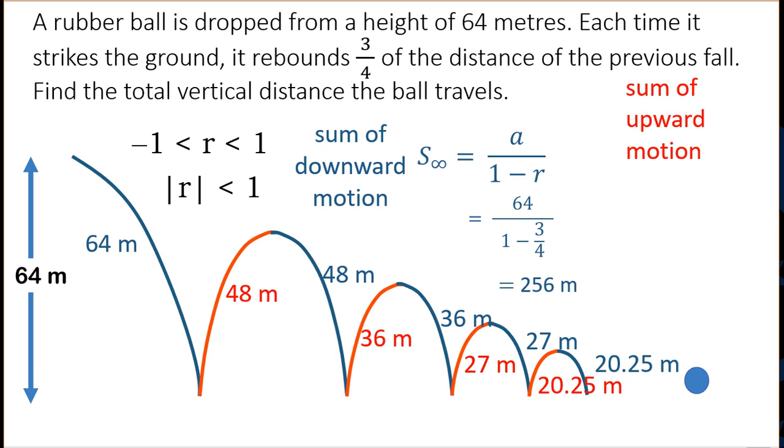Now I'm going to get the sum of the upward motion, and using the same formula with A is 48 and R is three-quarters, I get a total of 192 metres of upward motion.